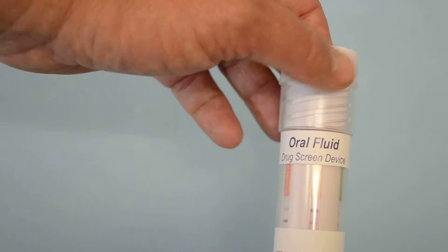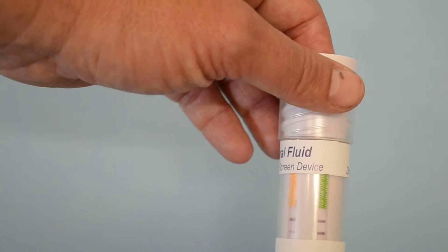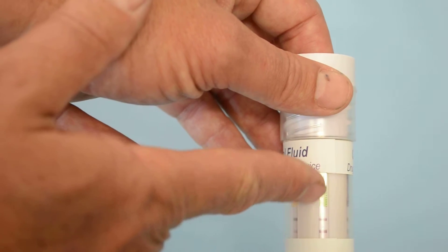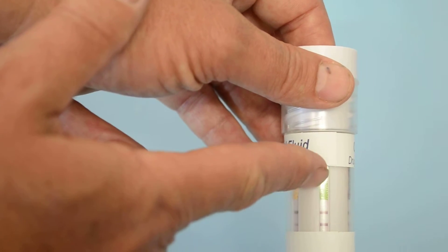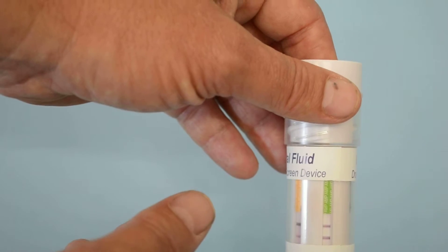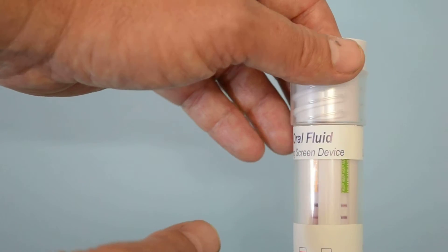An invalid test result would be any of these membranes which does not demonstrate a control line. The control line is the line that forms nearest the coding end at the highest level, and the test line is the line that forms nearest the saliva end where the sample has been squeezed out of that swab.